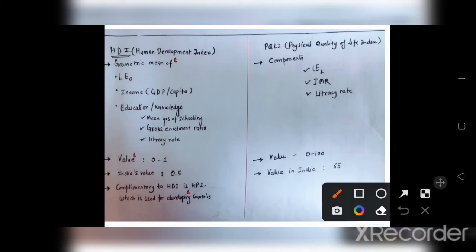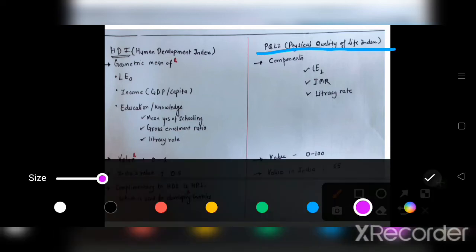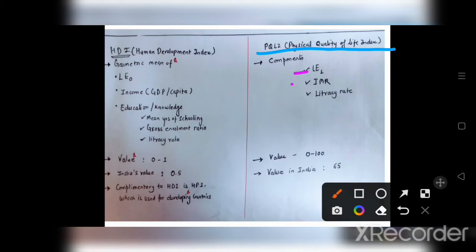Coming next to Physical Quality of Life Index. Physical Quality of Life Index also comprises of three components which is life expectancy at the age of one, infant mortality rate and literacy rate. Its value ranges from 0 to 100 and India's value is 65.